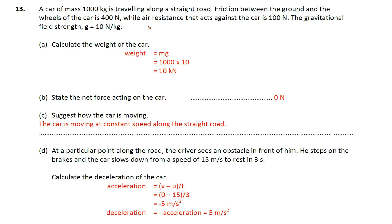Friction between the ground and the wheels of the car is 400 newton, air resistance that acts against the car is 100 newton. Gravitational field strength G, which is the gravity, is 10 newton per kg.